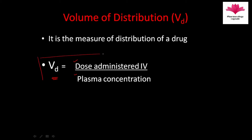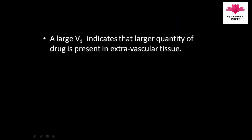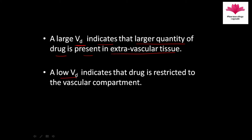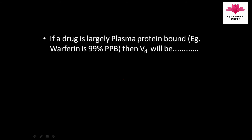Volume of distribution is calculated as dose administered IV divided by plasma concentration. This is a very important formula. If the volume of distribution is more, it indicates that a larger quantity of drug is present in extravascular tissue. If the volume of distribution is low, it indicates that the drug is restricted to the vascular compartment.